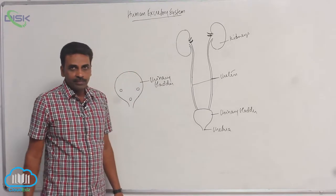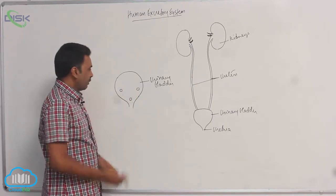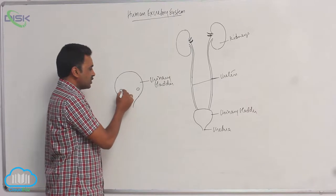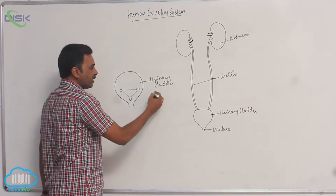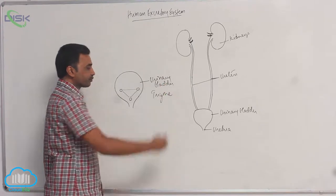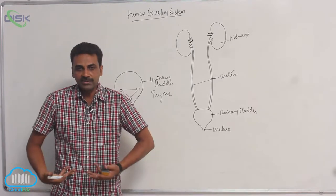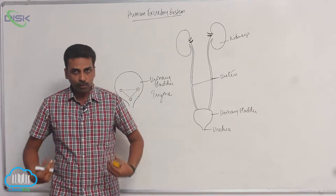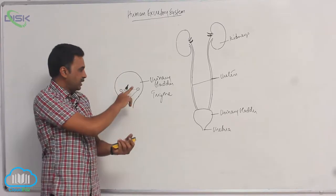At the base of the urinary bladder, if you observe, the base has a triangular region. This triangular region is called the trigone. At the posterior region you can see a pair of openings, and at the anterior region you can see one opening.